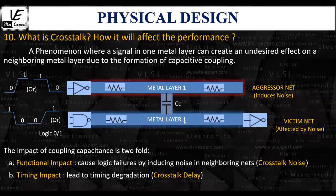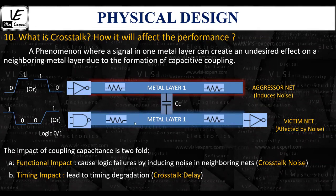This can be understood from the diagram shown here. There are two metal one layers running in the horizontal direction for a definite distance. The potential difference between these two metal layers creates a coupling capacitance, causing them to charge and discharge like a typical capacitor. This phenomenon is highly influenced by the distance between the conductors, their cross-sectional area, and the size of the metal layer regions facing each other, all of which determine the coupling capacitance.